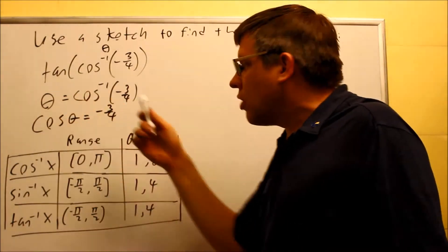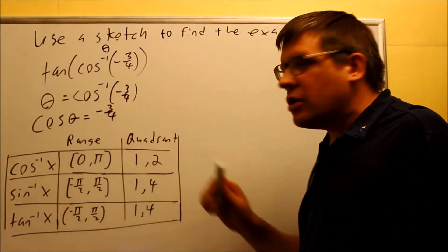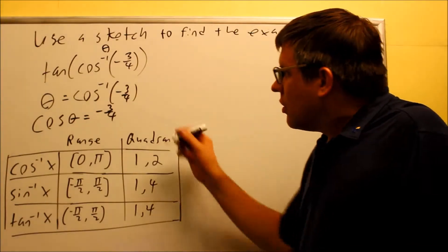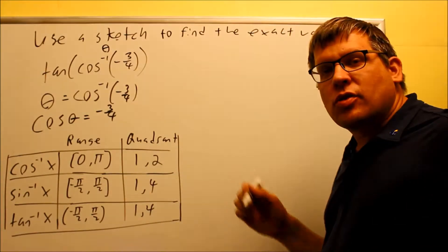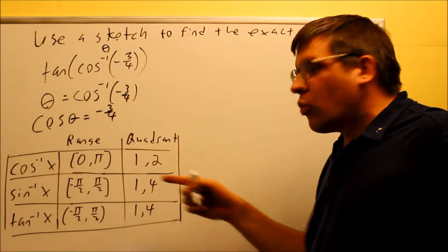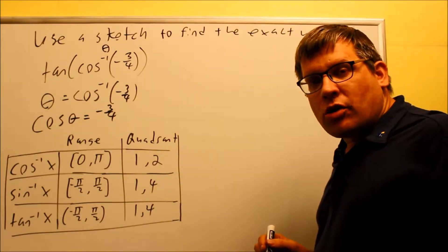This right here is a way that you can draw a triangle because we're going to use the trig definition to set that up, which would be adjacent over hypotenuse. We need to look at this to tell which quadrant we're able to draw the triangle in.